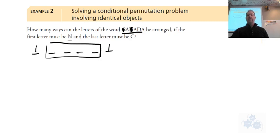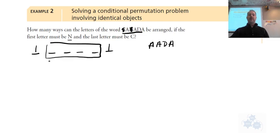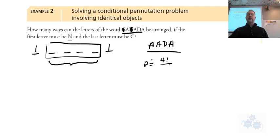Now we figure out the middle. What's left after removing N and C? We have A, A, D, A. With repeated objects, the number of permutations is four factorial divided by three factorial — because there are three A's. That gives us four times three times two times one divided by three times two times one, which is just four.